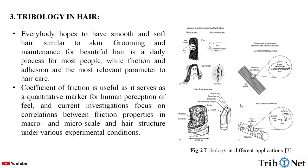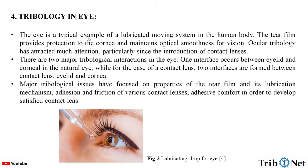Here in this figure, we can see the tribology in different applications of biology. Tribology in Eye — the eye is a typical example of a lubricated moving system in the human body. The tear film provides protection to the cornea and maintains optical smoothness for vision. Ocular tribology has attracted much attention, particularly since the introduction of contact lenses.